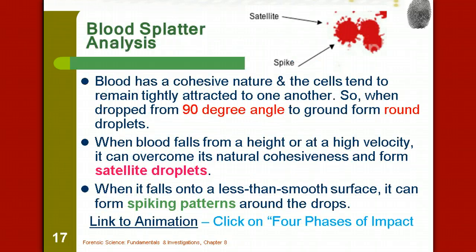Blood has a cohesive nature, just like water does. Remember in biology when you put drops of water on top of a penny to determine its cohesive nature? Blood acts much the same way. All of the cells remain tightly attracted to each other. So when they drop from a 90 degree angle to the ground, they tend to form really round droplets.